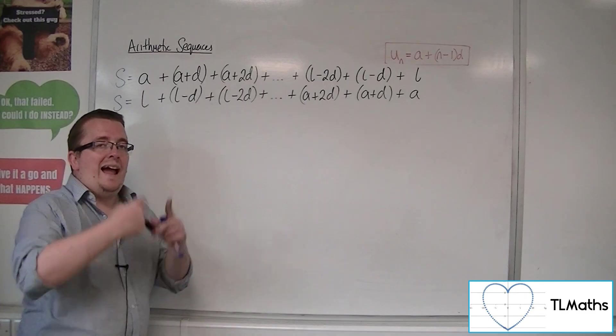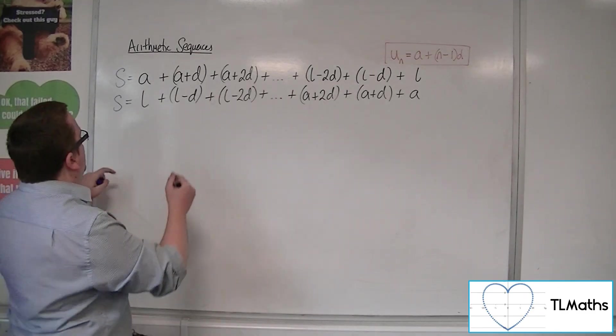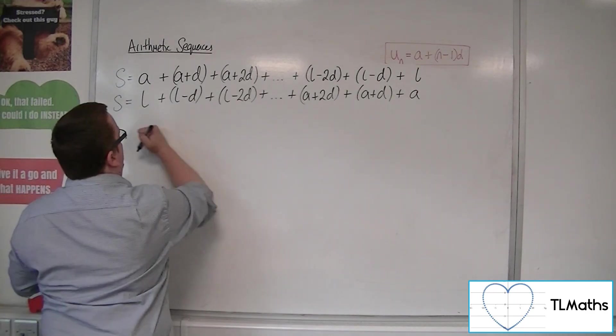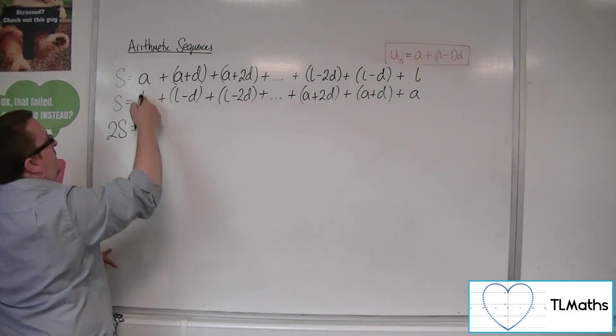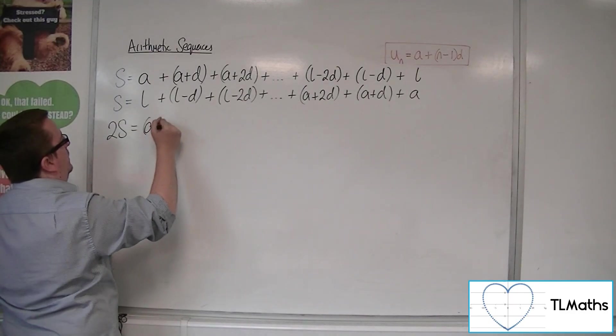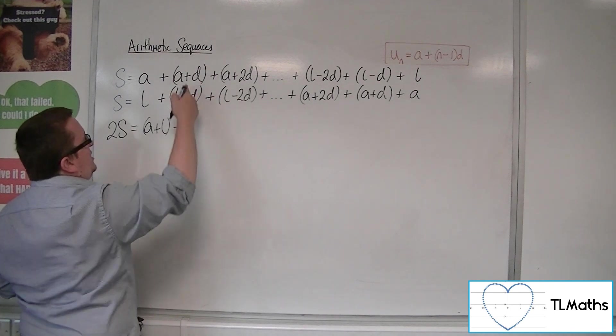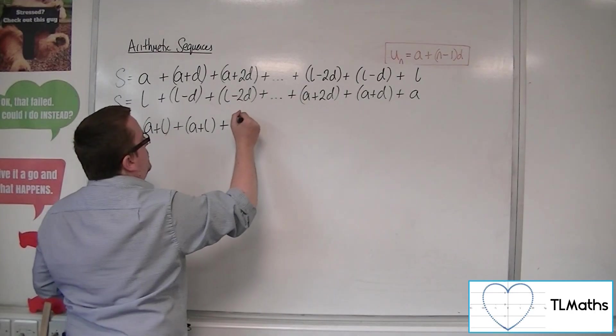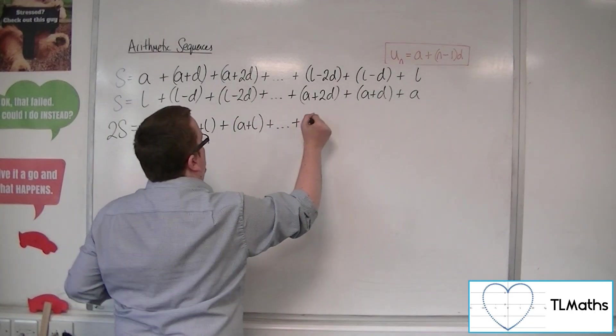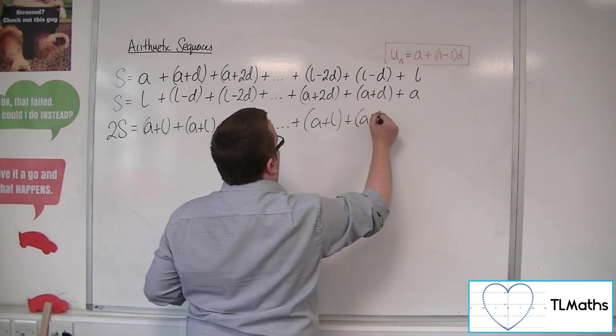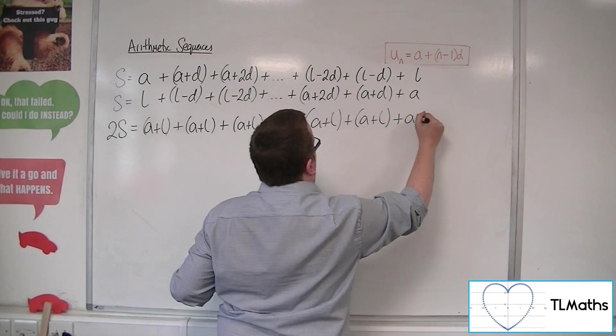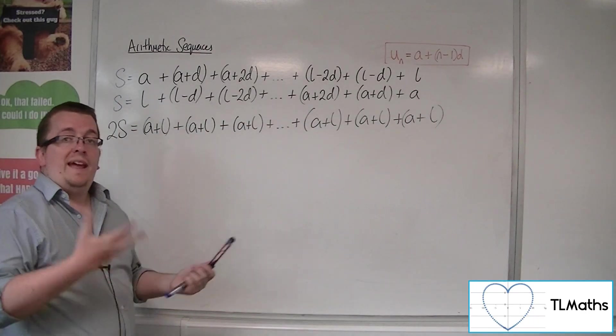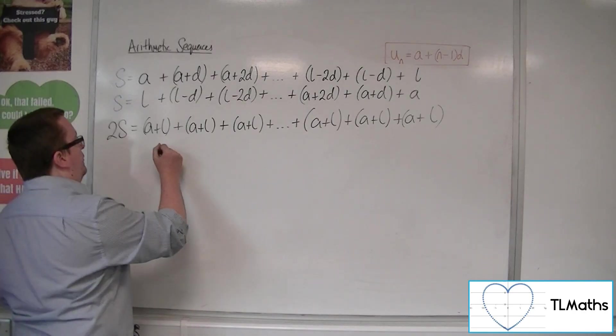So if I then added these two series together, I'm going to get 2S equals a + l plus... well, when adding these two together, the d's cancel, so I get a + l, the 2d's cancel, so I get a + l, plus etcetera, a + l, plus a + l, plus a + l. Well, all of the terms are now a + l.